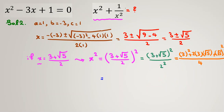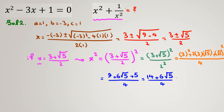This gives 14 plus 6 root 5, all over 4. Dividing numerator and denominator by 2, x squared equals (7 plus 3 root 5) over 2. Now substituting into x squared plus 1 over x squared: (7 plus 3 root 5) over 2, plus 1 over (7 plus 3 root 5) over 2, which equals (7 plus 3 root 5) over 2 plus 2 over (7 plus 3 root 5).